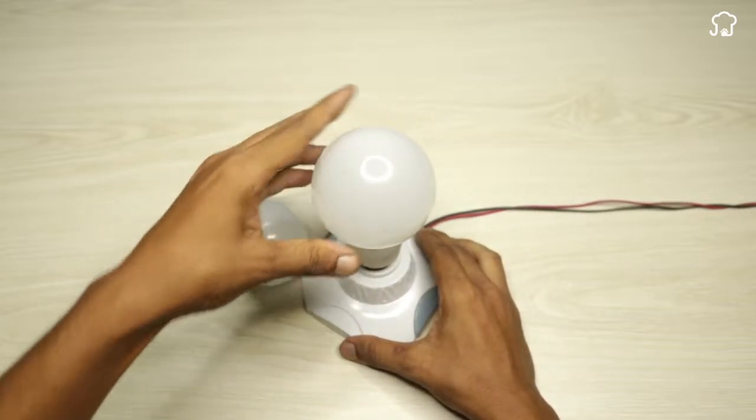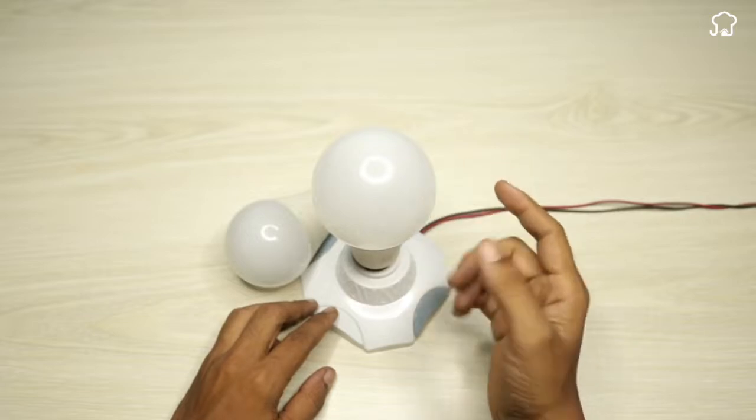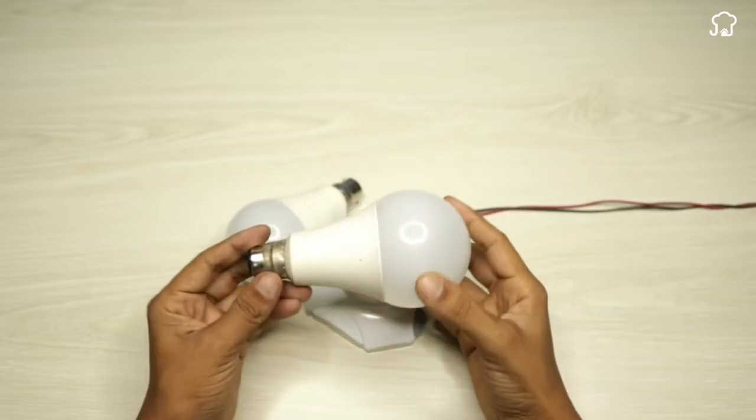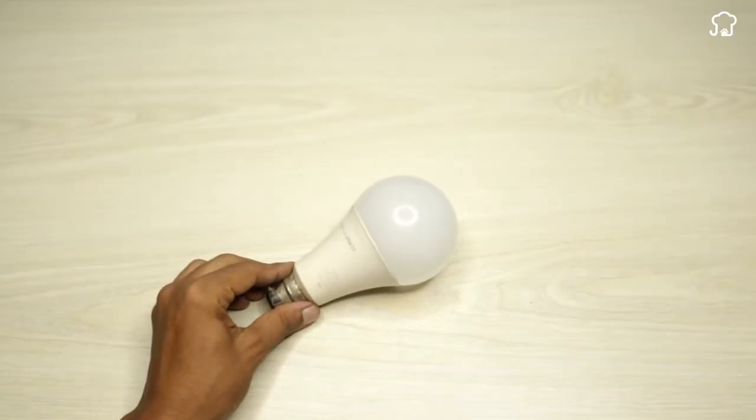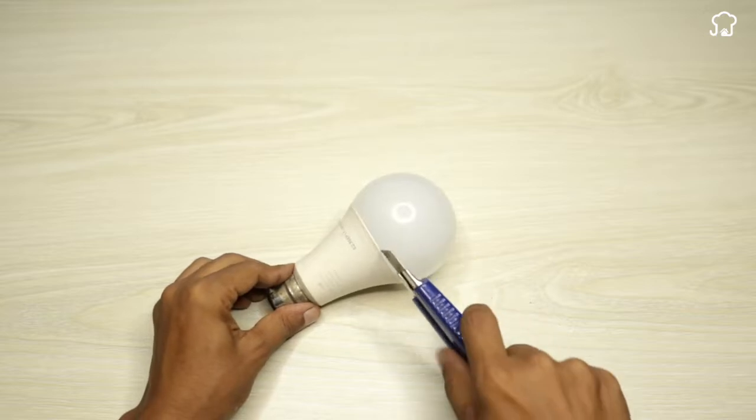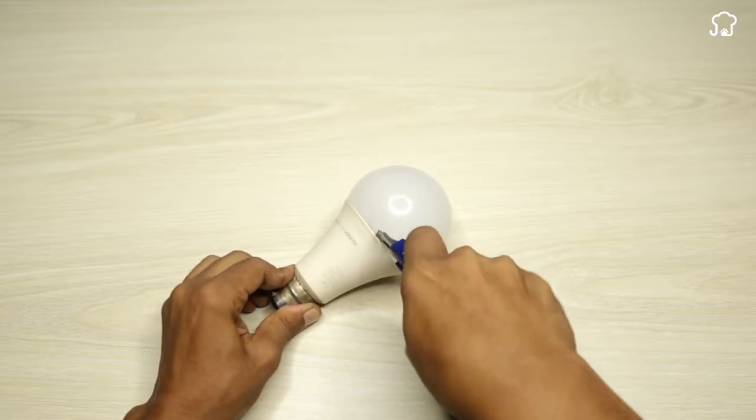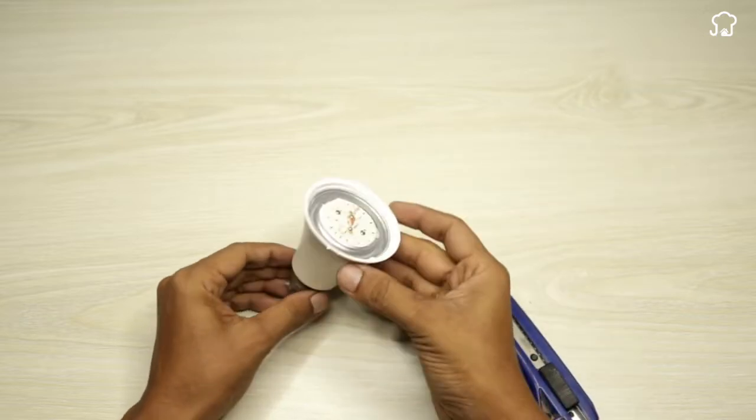To start, take a burned out light bulb like the one I show you on the screen. With the help of a cutter, remove the plastic cover that covers the bulb circuits. It is important to do this carefully to avoid damaging the internal components.